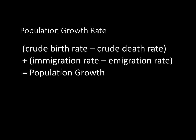Here's an important equation for AP Environmental Science: population growth rate. The formula is: crude birth rate minus crude death rate, plus immigration rate minus emigration rate, equals population growth. It's easy to remember because you group birth and death rate together, then immigration and emigration — this is something that will keep coming up.